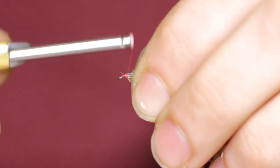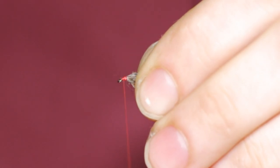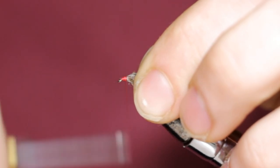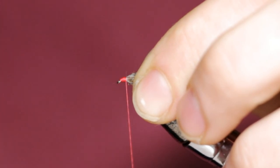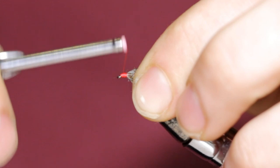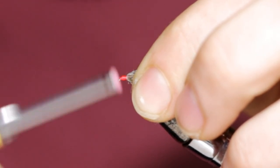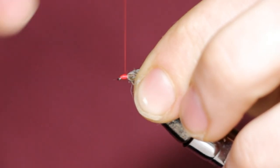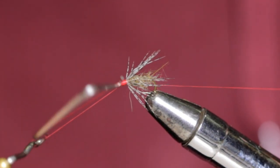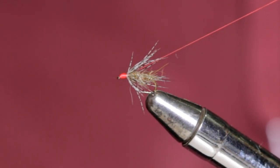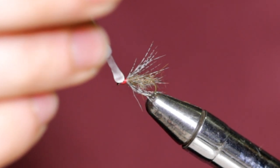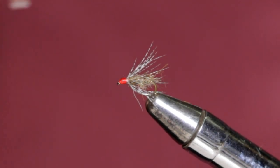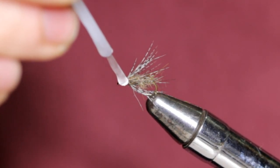Alright, now I'm just going to clean this up and start building up the signature red head that this fly is known for. Come in and throw a whip finish in. Snip off the thread, put some head cement on. And that's how you tie Richard's wet fly.